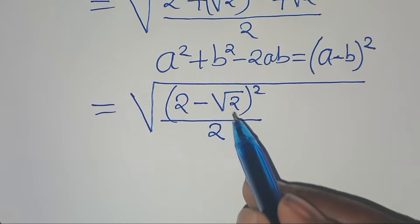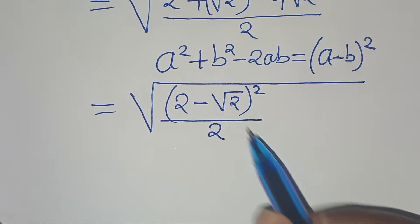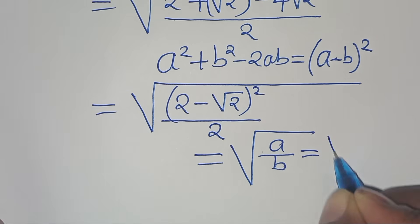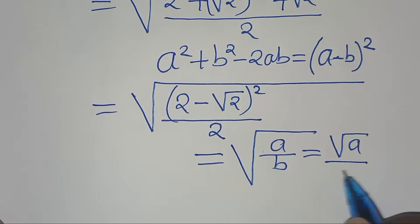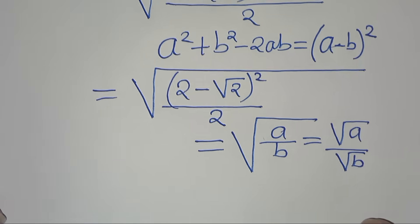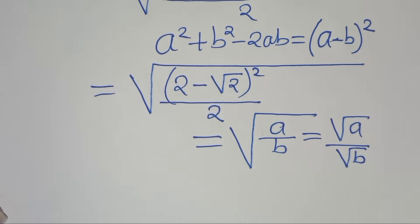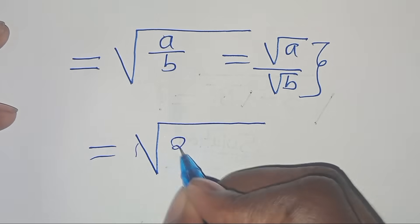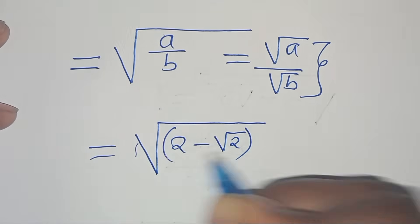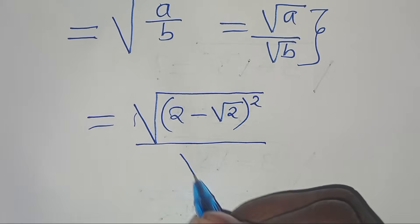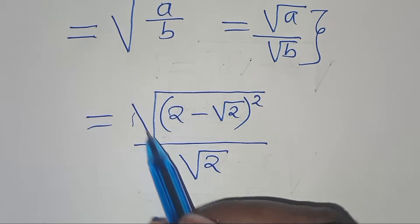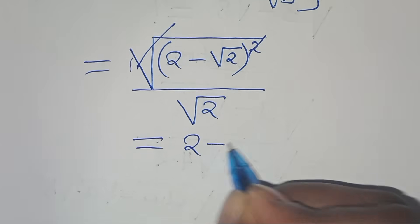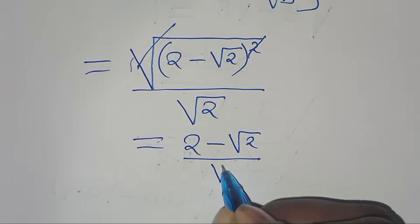Now we have the square root of (2 minus square root of 2) squared divided by 2. This is in the form of square root of a over b, which we can express as square root of a divided by square root of b. Applying this property, we have the square root of (2 minus square root of 2) squared, then divided by square root of 2. We can eliminate the outer square root, so in the numerator we have 2 minus square root of 2, divided by square root of 2.